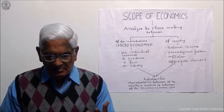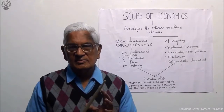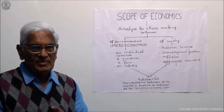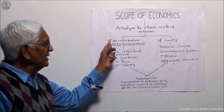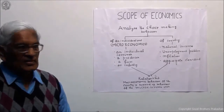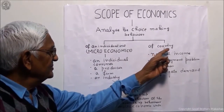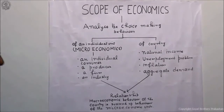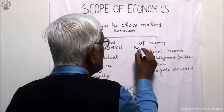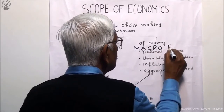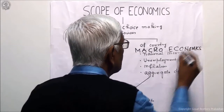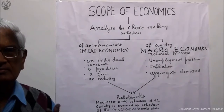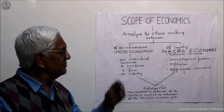Now broadly, economics is divided into two parts: microeconomics and macroeconomics. Microeconomics is the study of an individual unit. Macroeconomics is the study of the nation as a whole — the country as a whole. Although you have studied the meaning of micro and macro in class 10, where it simply means small and large.